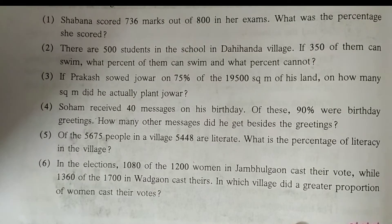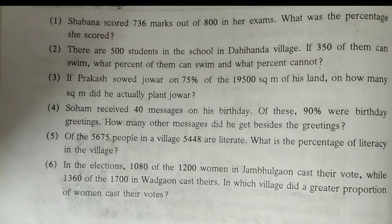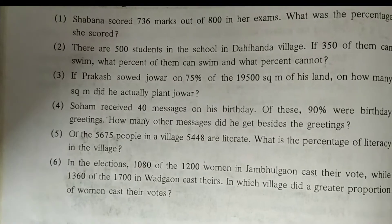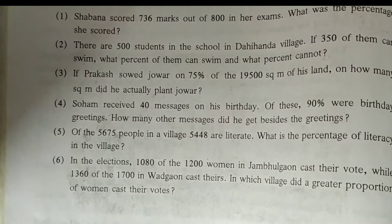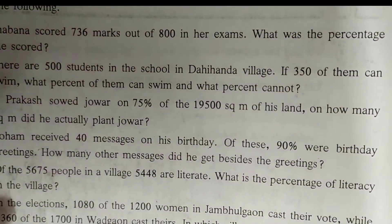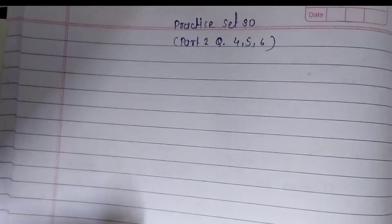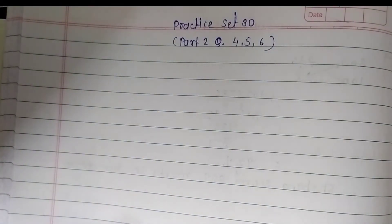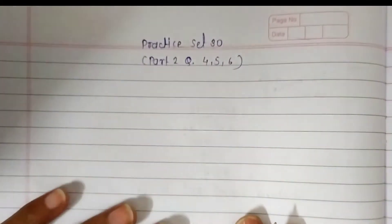We are going to write the given information first and then solve it step by step. The given information: he received a total of 40 messages on his birthday. We don't know how many messages were birthday greetings — only their percentage is given. So first we find how many messages were birthday greetings, then we find the answer to our main question: how many messages were other messages besides the greetings.